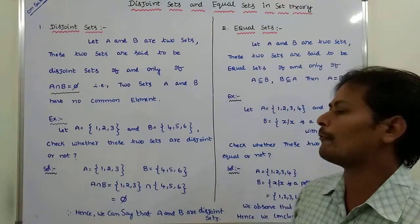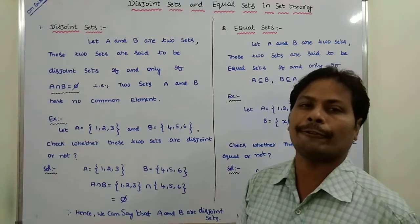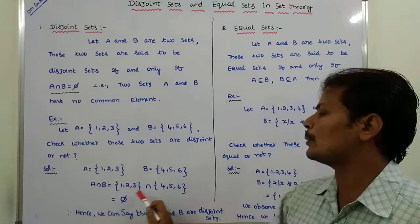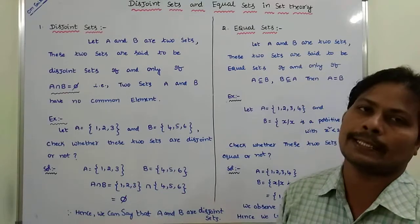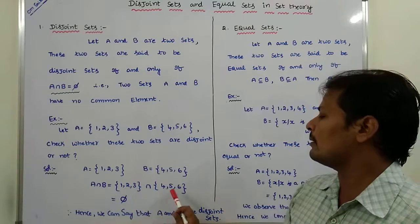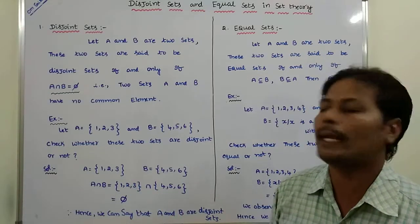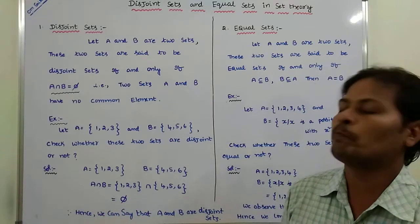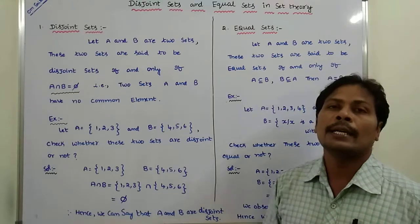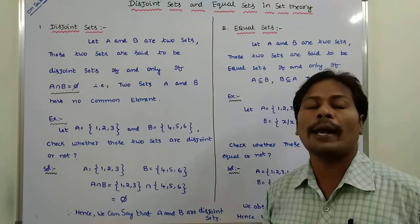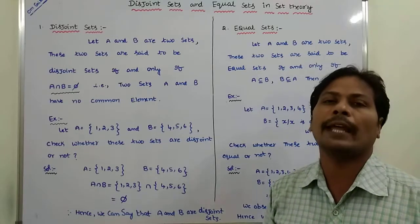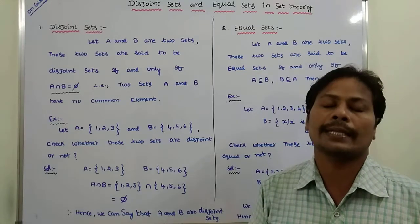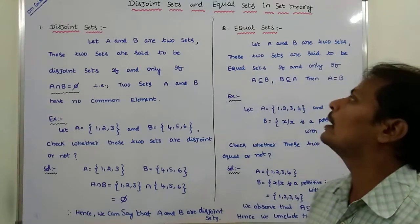So A = {1, 2, 3} and B = {4, 5, 6}. A intersection B = {1, 2, 3} ∩ {4, 5, 6}. By observing these two sets, there are no common elements between them. Therefore, A intersection B is equal to φ (empty set). Hence, we can say that set A and set B are disjoint sets because they have no common element between them.